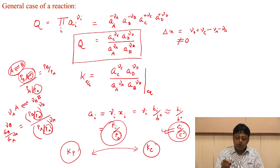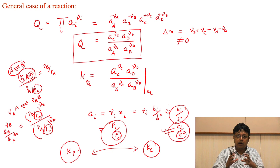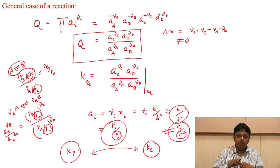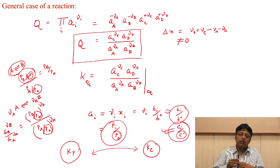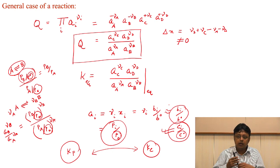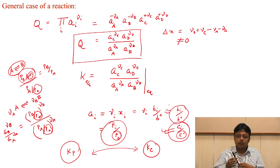We are dividing by one bar so that we make the quantity dimensionless — you express pressure in bar and divide by one bar, so it is just a pure number. Similarly for concentration or molality — it is just a dimensionless number. In the next section, we will discuss how the equilibrium constant is affected by changes in pressure or temperature, and what contributions external disturbances in pressure or temperature make.